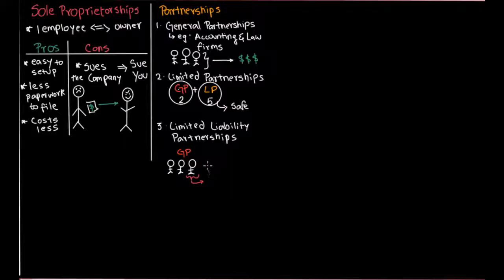So what happens here is that the rest of the two persons, they are protected, assuming that they have not been involved in that bad practice. They're protected from any problem the third person has caused. So if you're going to do a partnership, it is better to start a limited liability partnership. Some people like accounting and law firms choose a general partnership to show that they are trustworthy.